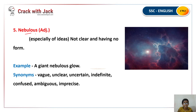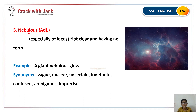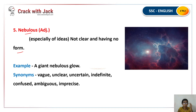The next word is Nebulous. Nebulous means not clear — vague and unclear. If your mind is confused and you don't know what to do, your thinking is nebulous. Synonyms: vague, unclear, uncertain, indefinite, ambiguous, imprecise.